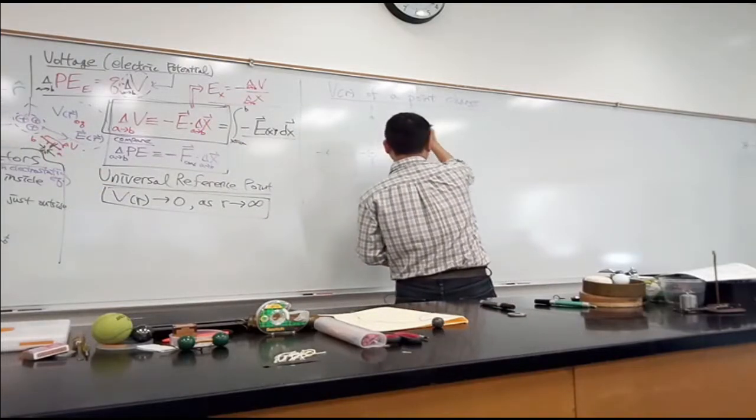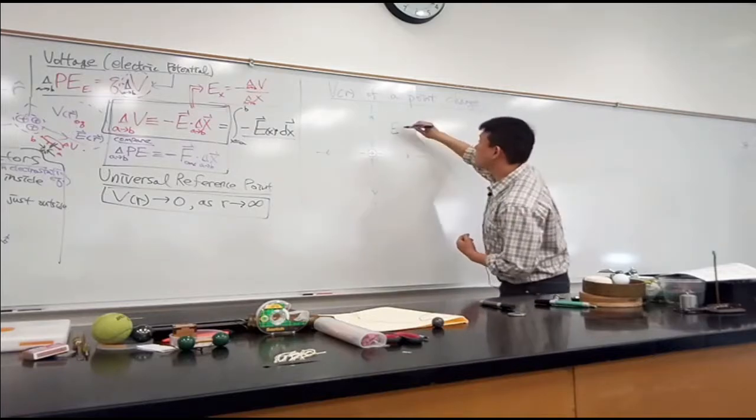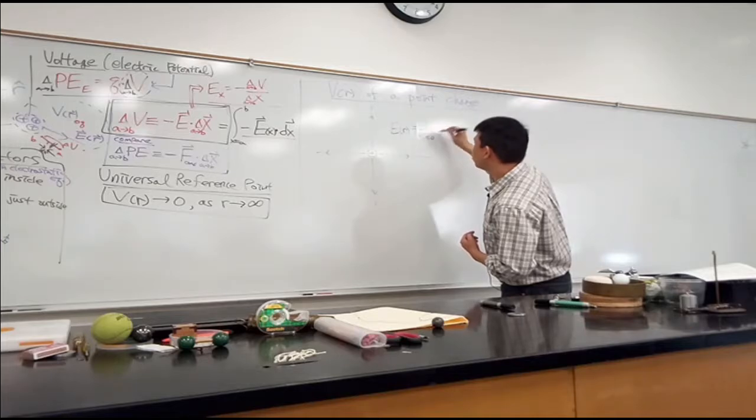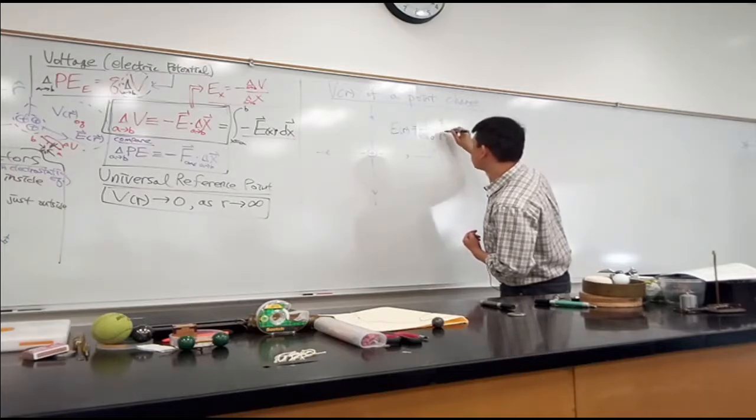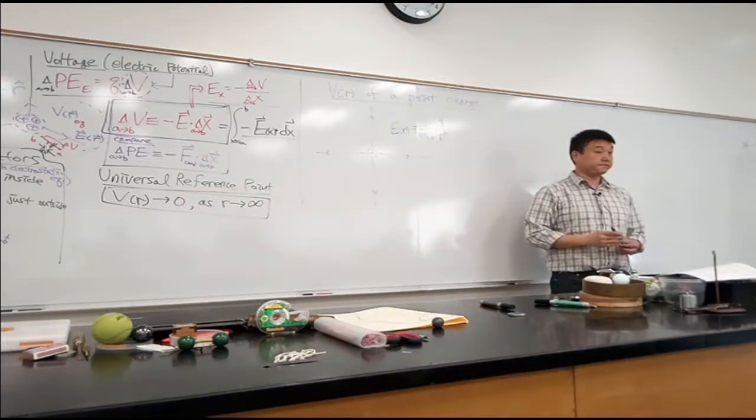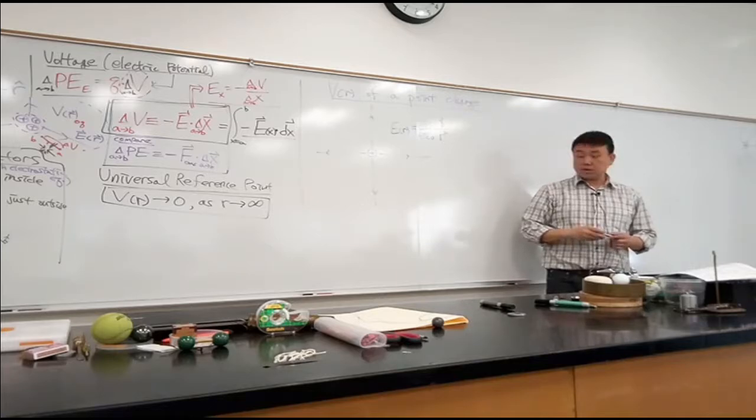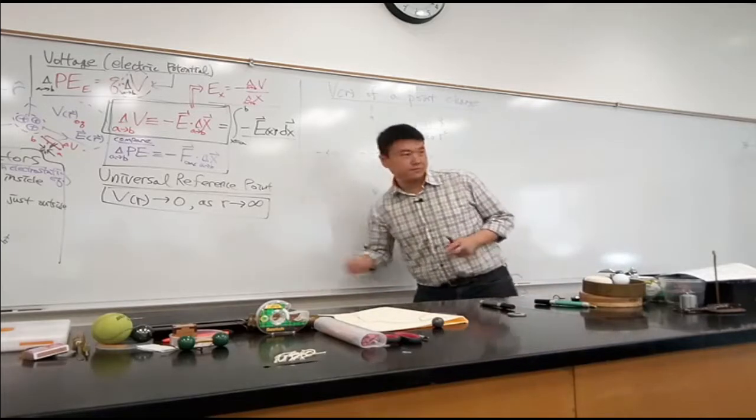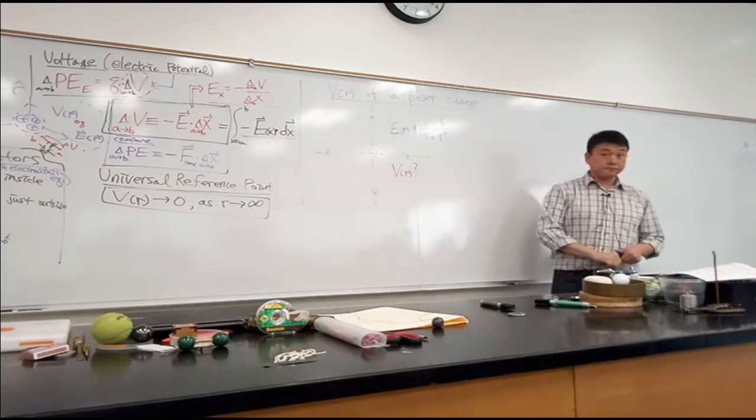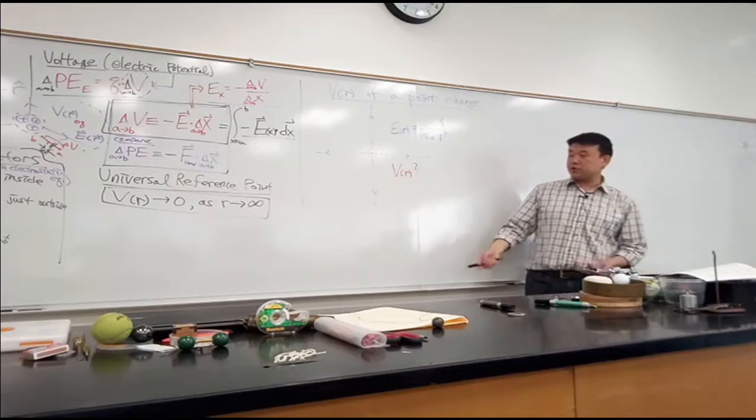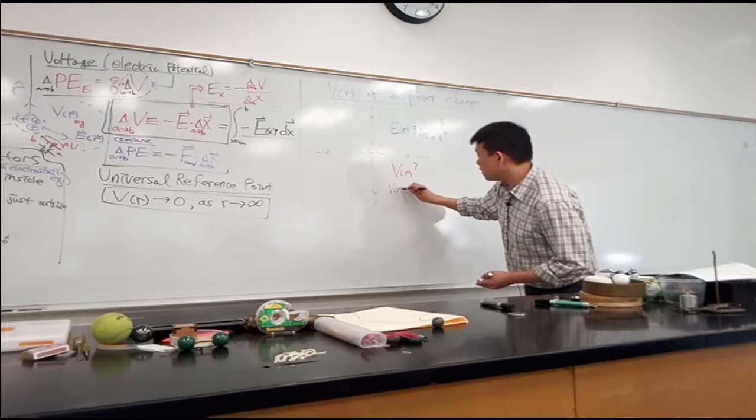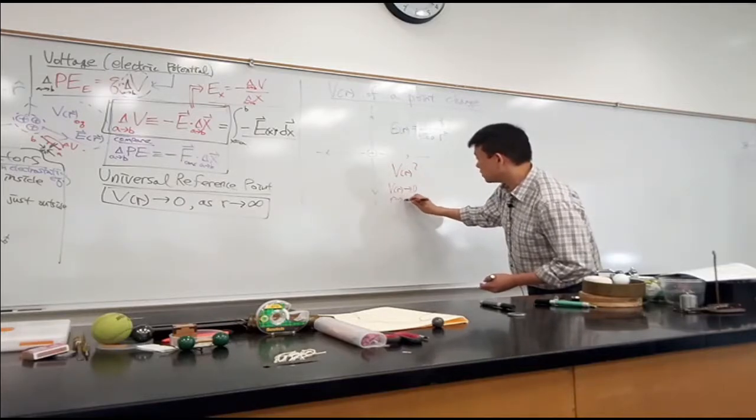And you even know what the magnitude of that electric field is, because you remember this. So the electric field due to that point charge as a function of distance r is one over four pi epsilon naught, amount of charge over r squared. And I'm talking about the magnitude, so I don't have to worry about the r hat vector. So the question here, as you guessed from the title, is what is the voltage as a function of distance? And if I want to be sure that I'm using this universal reference point, then I just say V of r goes to zero as r goes to infinity.